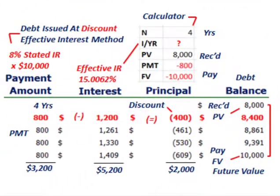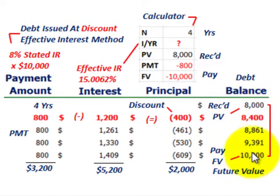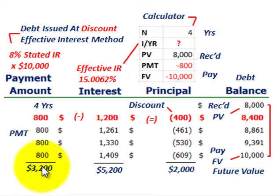Now let's look at debt issued at a discount. Same scenario — a $10,000 loan, 8% stated rate of interest — but at a discount we would have received only $8,000 when the note was issued, while we have to pay back $10,000 when it becomes due. Determining the effective interest rate: the cash payment is still 8% times the $10,000 face amount, giving $800 per year. Over four years that's $3,200 in total cash payments based on the 8% interest rate.